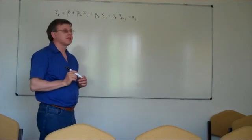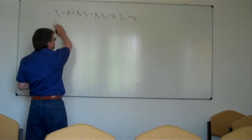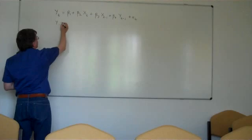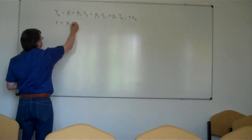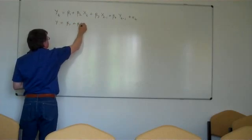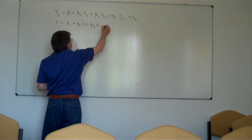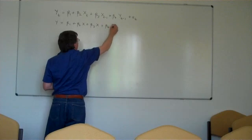So suppose y and x have settled down to equilibrium values. We can remove the t subscripts from here so that we have y equals beta1 plus beta2 x plus beta3 x plus beta4 y.